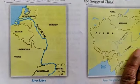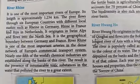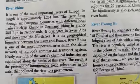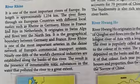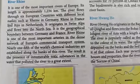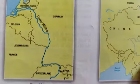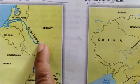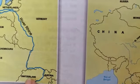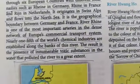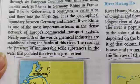Coming to River Rhine — see where it originates and how it ends. It is one of the most important rivers of Europe. Its length is approximately 1,234 kilometers. The river flows through six European countries with different local names, such as Rhein in Germany, Rhein in Fass, and Rhein in Netherlands. It originates in the Swiss Alps and flows into the North Sea, passing through Switzerland, Germany, Austria, France, and then finally into the North Sea.